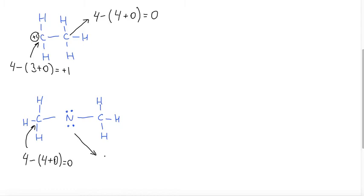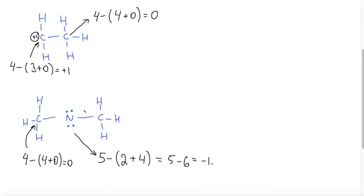Now let's do nitrogen. Nitrogen, if you look it up on the periodic table, is located in group 5. Therefore, it has 5 valence electrons. How many bonds does it have? It has a bond to the left and a bond to the right — 2 bonds. How many lone electrons does it have? It has 1, 2, 3, 4 — four lone electrons. 5 minus 6 gives me minus 1. Therefore, this nitrogen has a minus 1 charge.